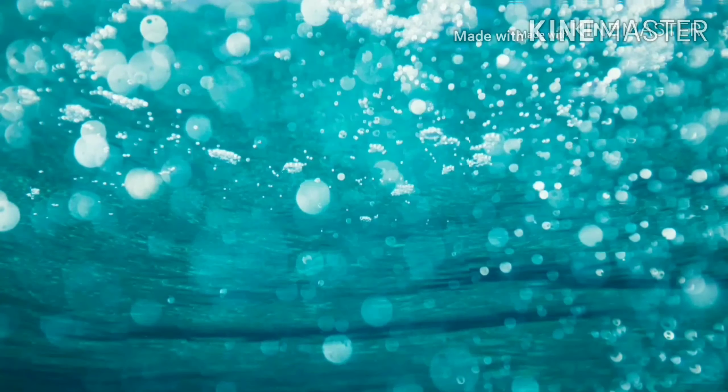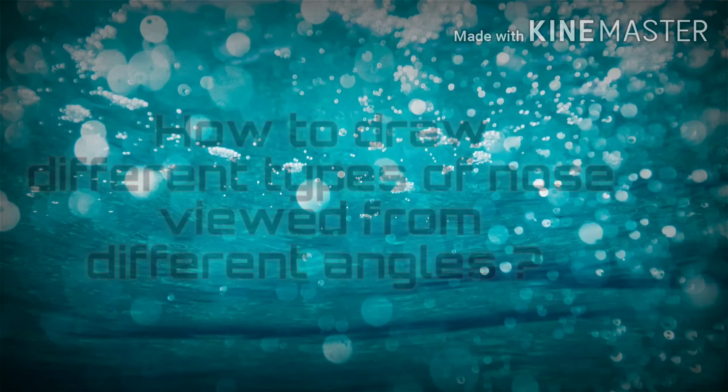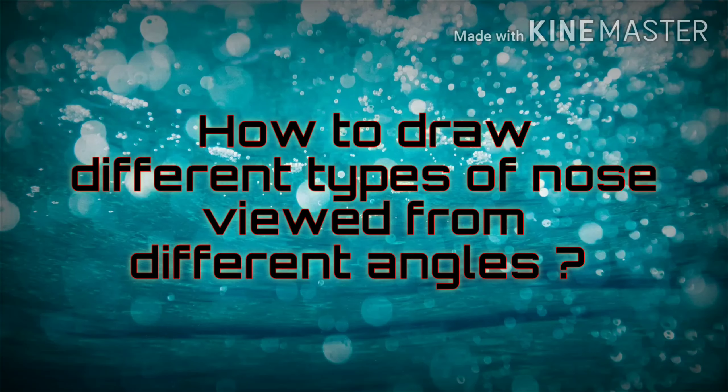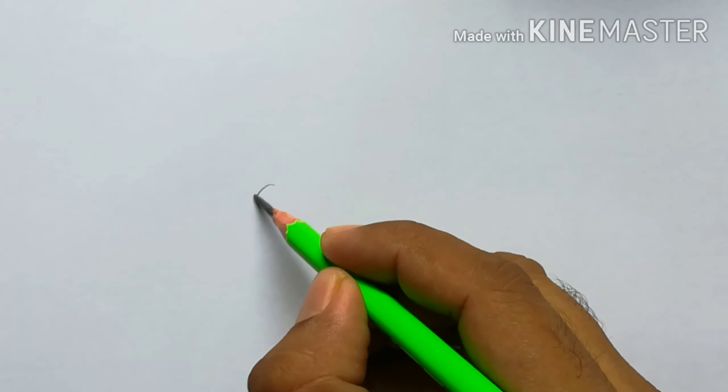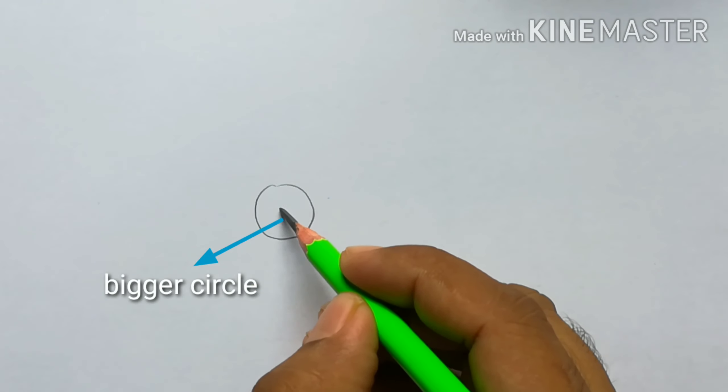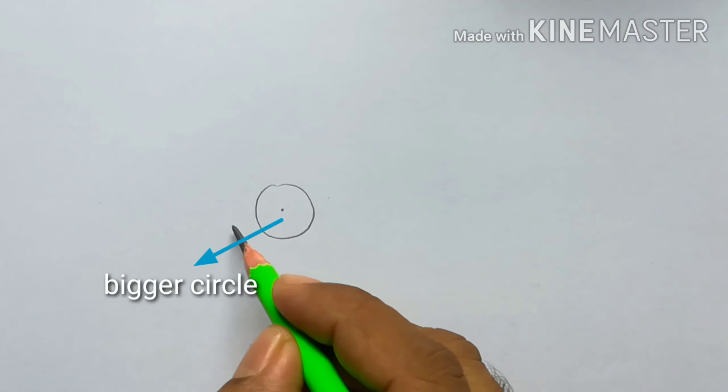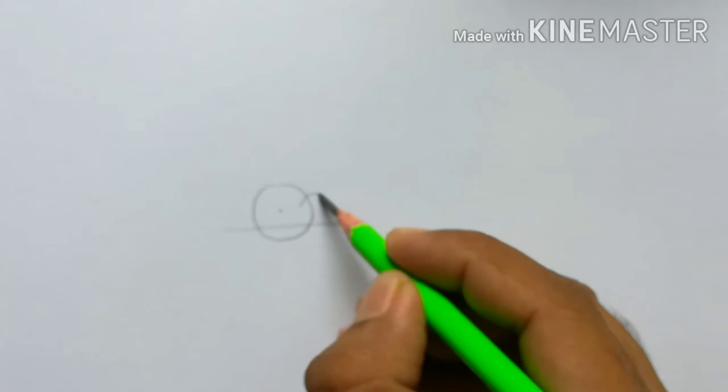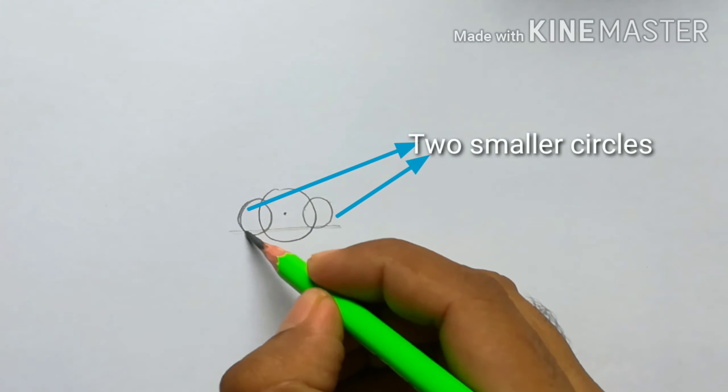Hello friends, in this video I'm going to discuss how we can draw different types of noses viewed from different angles. So first of all, you have to draw a bigger circle, two smaller circles, and two slant lines on both sides.